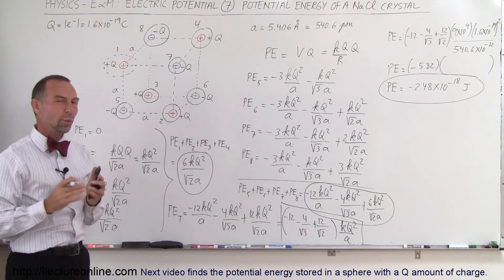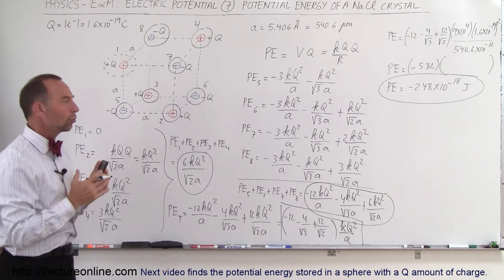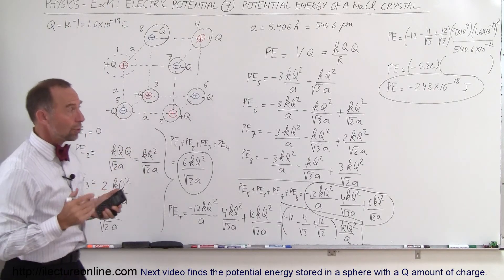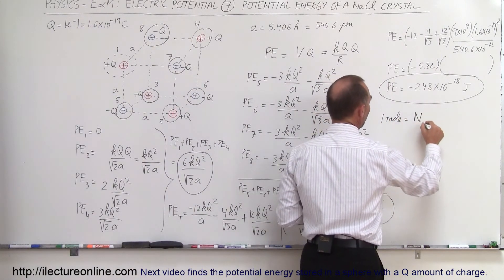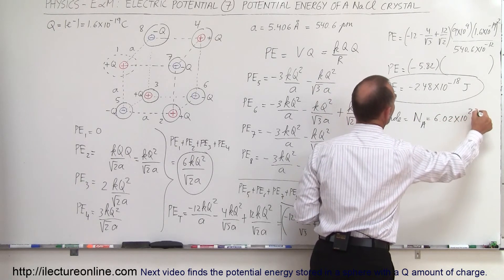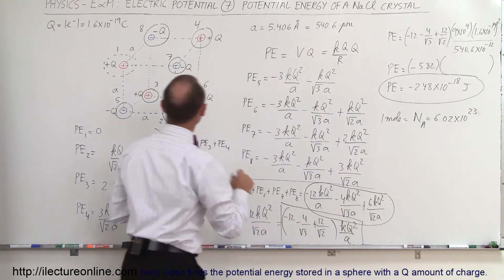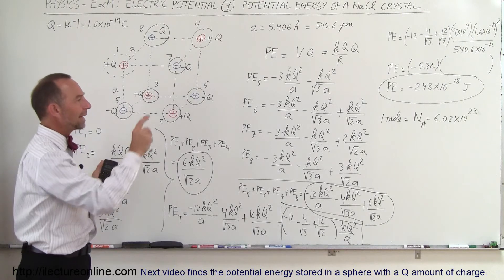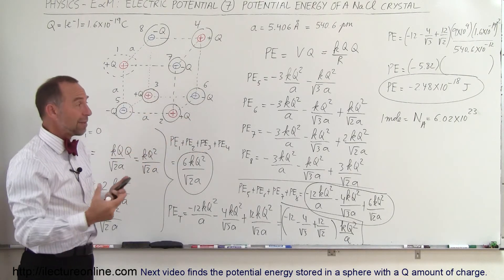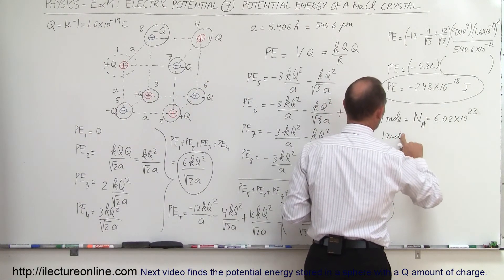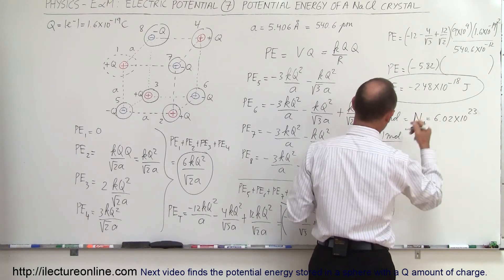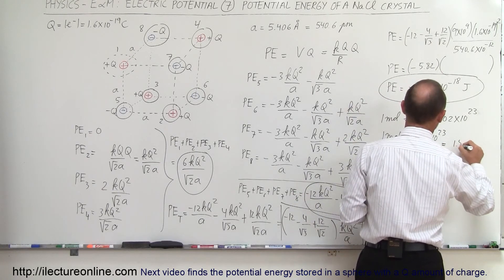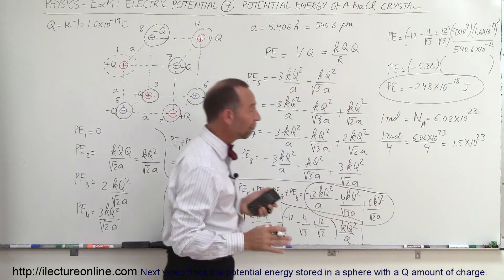Now the question is: if that's the potential energy of a single sodium chloride crystal, what would be the potential energy for a mole of crystals? That would give us the enthalpy of formation of sodium chloride out of sodium and chlorine atoms. We know that 1 mole is equal to Avogadro's number, which is 6.02 times 10 to the 23. Notice that we have 4 of each atom in the crystal unit, so if we want to form a mole of crystals, we take Avogadro's number and divide it by 4 — that's the number of crystals we need. That gives roughly 1.5 times 10 to the 23 crystals per mole.